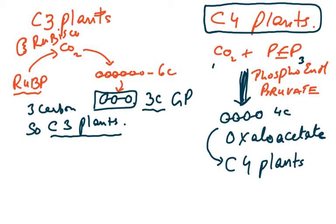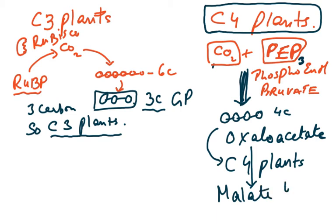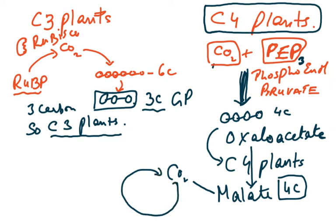Now if you look at C4 plants, something is different. The carbon dioxide combines with a 3-carbon molecule called PEP — phosphoenolpyruvate. This phosphoenolpyruvate combines with carbon dioxide to form oxaloacetate, which is a 4-carbon compound. The oxaloacetate then converts into a 4-carbon malate. It is this 4-carbon malate which provides carbon dioxide, and the Calvin cycle continues. So the name C4 comes from oxaloacetate and malate, which are both 4-carbon molecules.